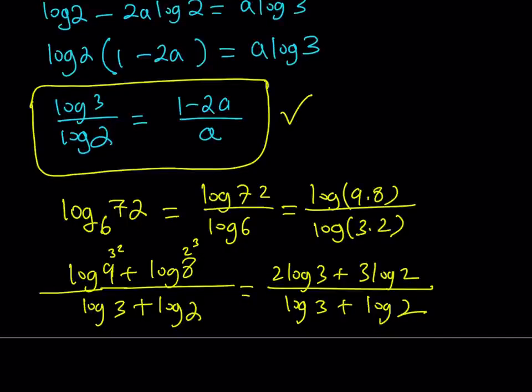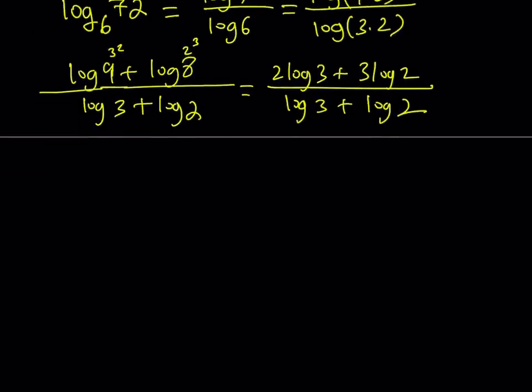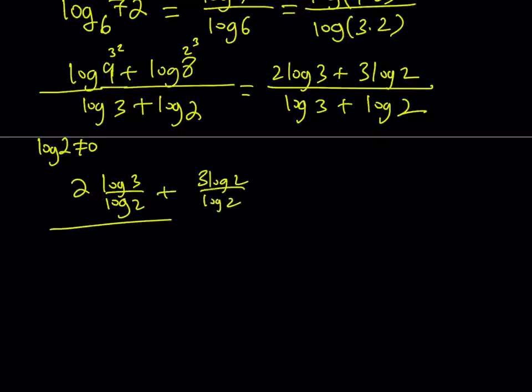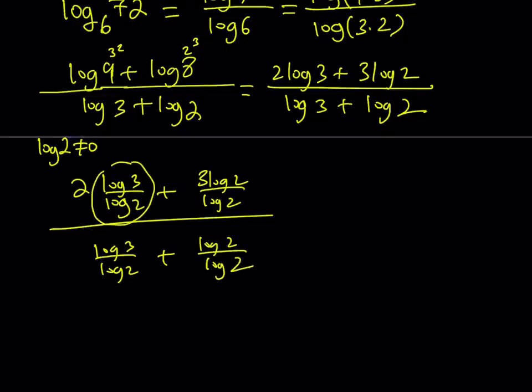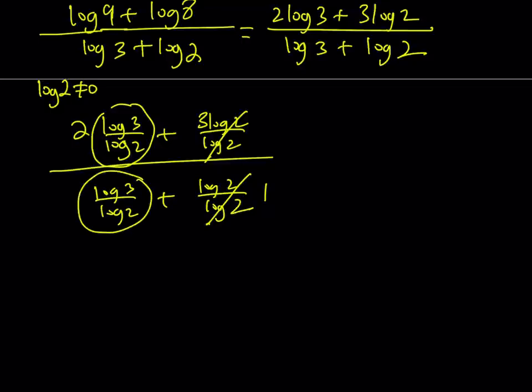Now, note that I got something that contains log 3 and log 2. And I do know the ratio of log 3 over log 2. So how could I use this information? Well, one method would be isolate log 3 and plug it in, or my method. The method that I'm going to use is, since log 2 is not 0, I can divide everything by log 2. Let's go ahead and do it. Divide by log 2, divide by log 2, and then divide by log 2, and divide by log 2. Now, notice that this is my expression, the ratio. This is 1, and this is 1. Just make sure to write a 1 there. And this is my expression.